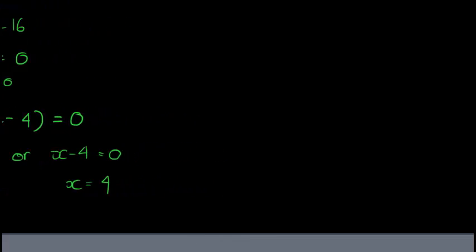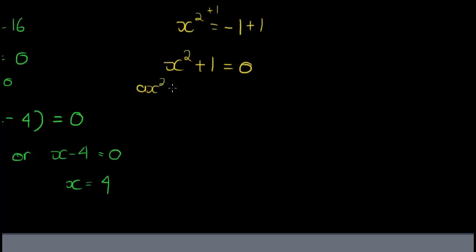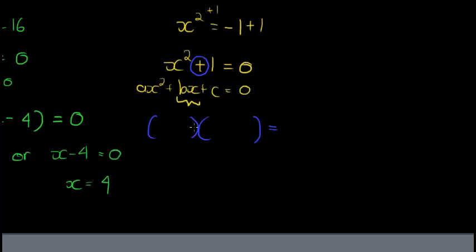Let's look at the case where we had no solutions: x squared equals negative one. If we add one to both sides, we get x squared plus one equals zero. Again we have no bx term. It would have helped if it were the difference of two terms, but it's not — there's a plus, so this is not the difference of two squares. We can't find two brackets for this quadratic expression. However, that does not mean it has no solutions; all we know is we can't factor it, so we'll look at another method.